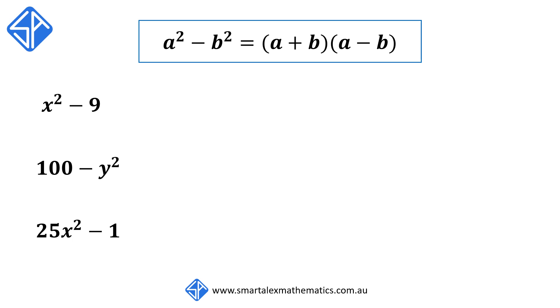Our first example, we want to factorize x² - 9. We can rewrite this as x² - 3². We see that this is a difference of two squares, so this would factorize to (x + 3)(x - 3).